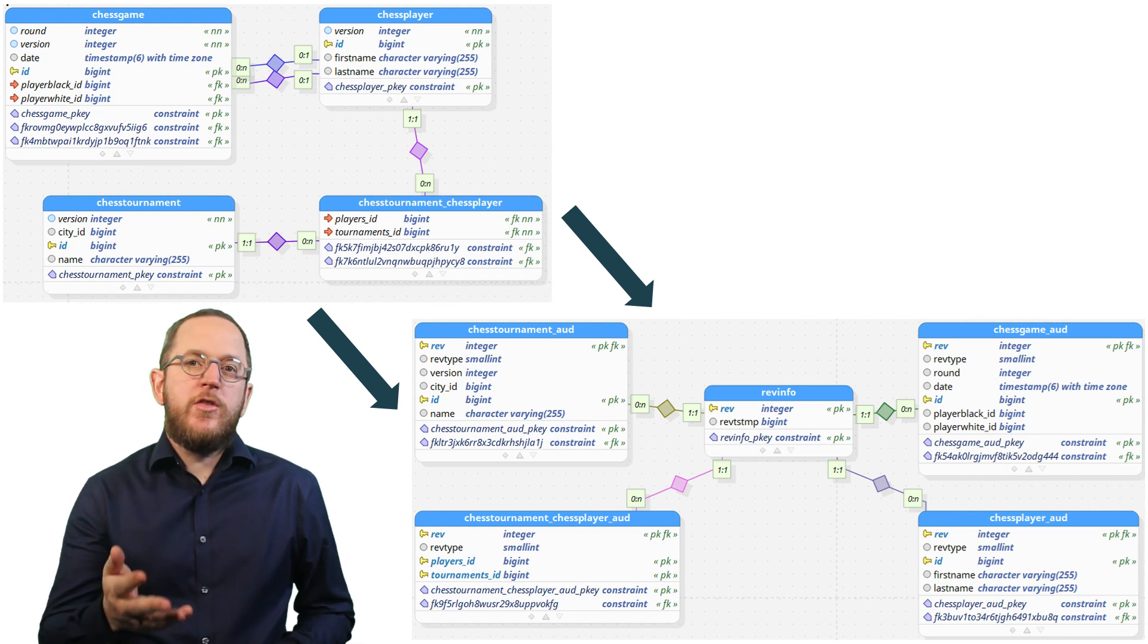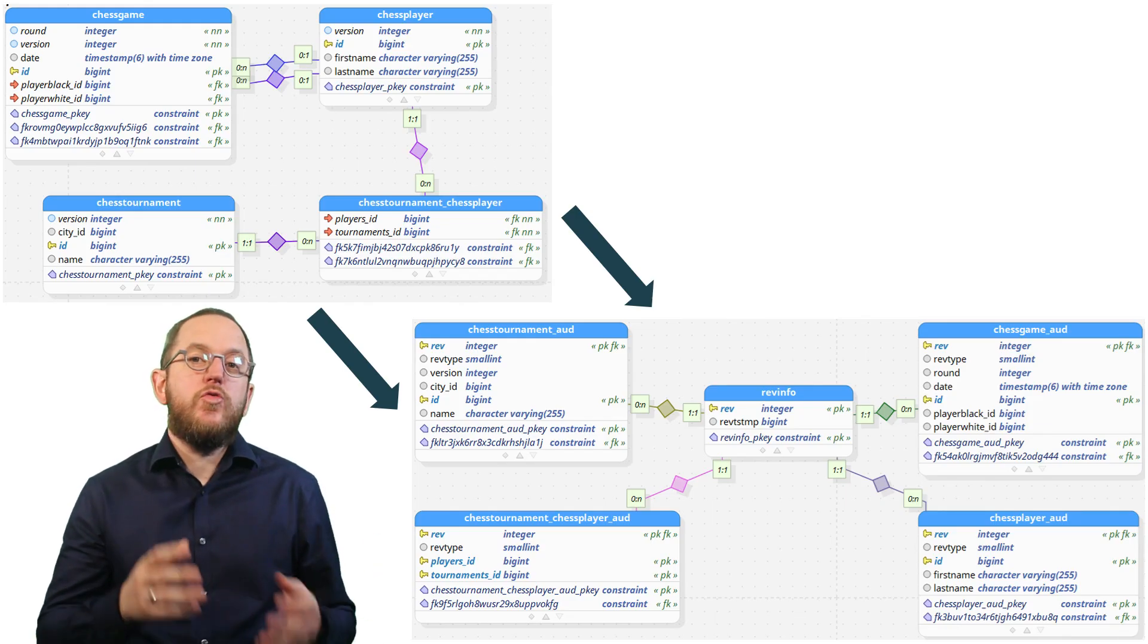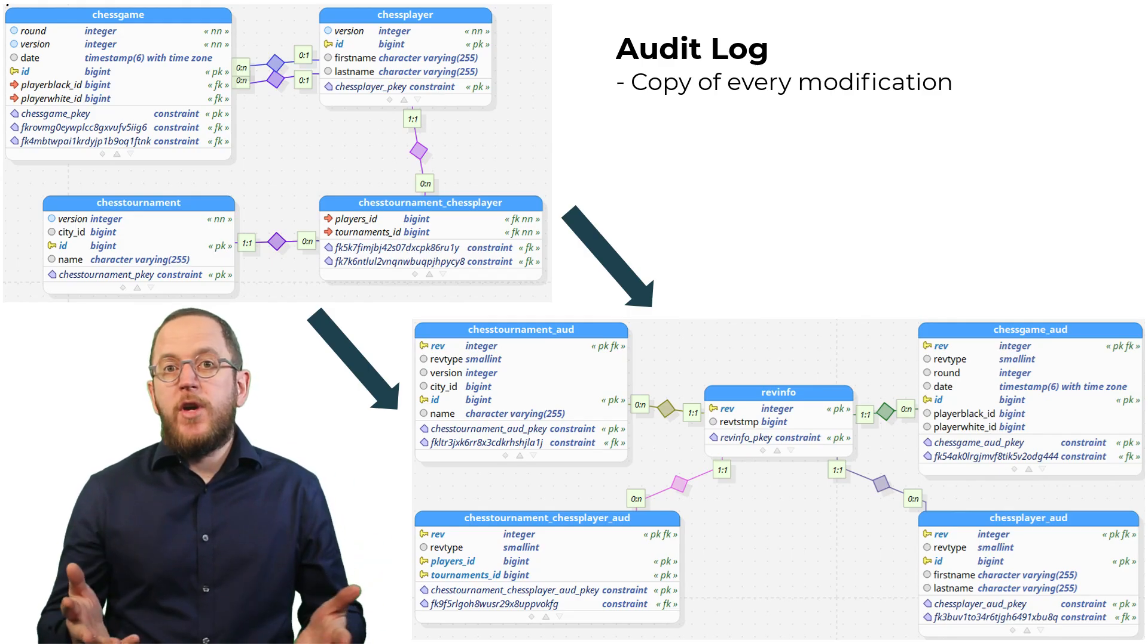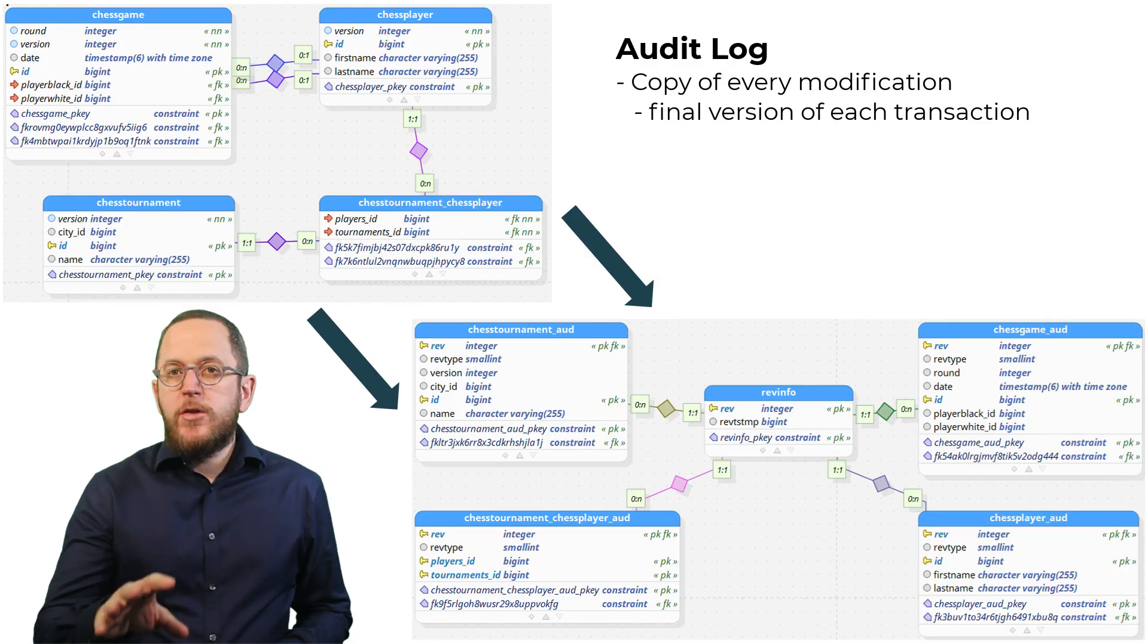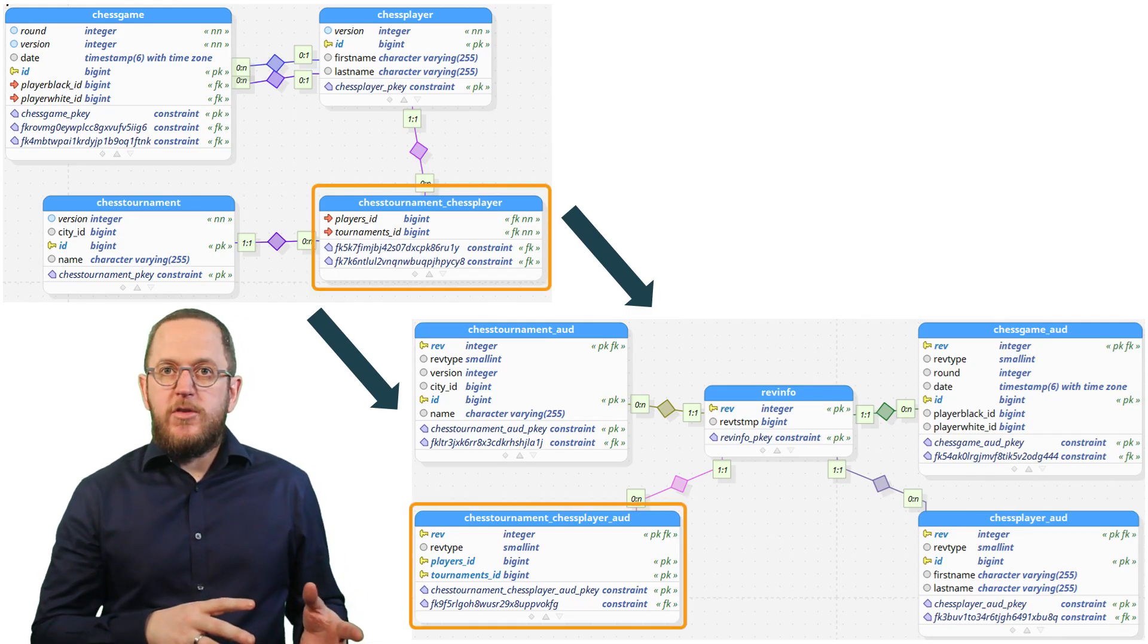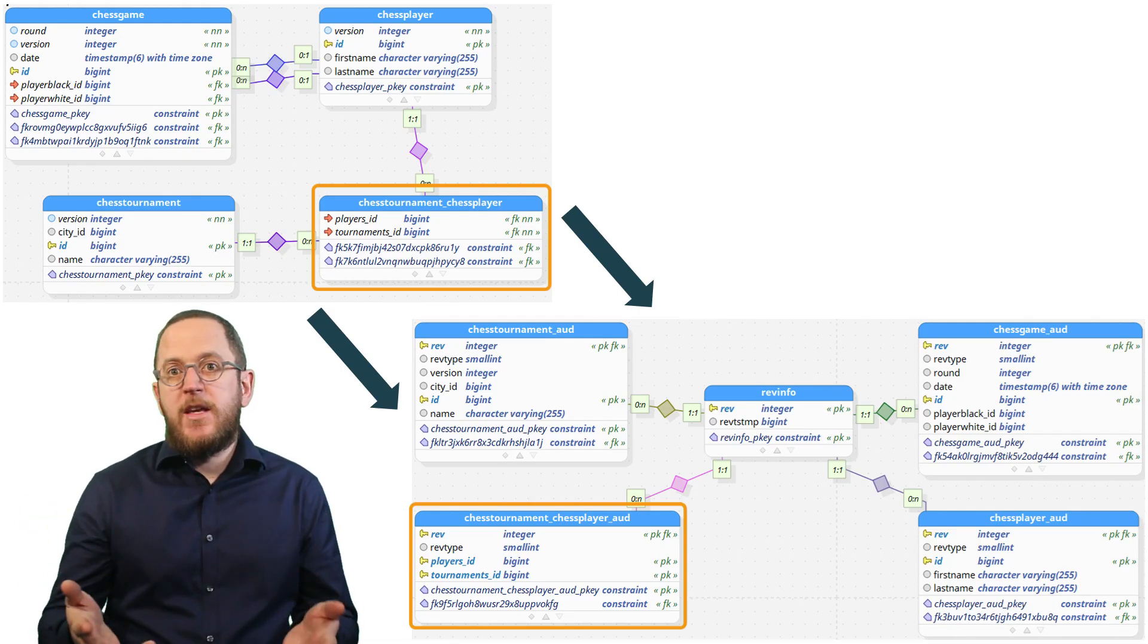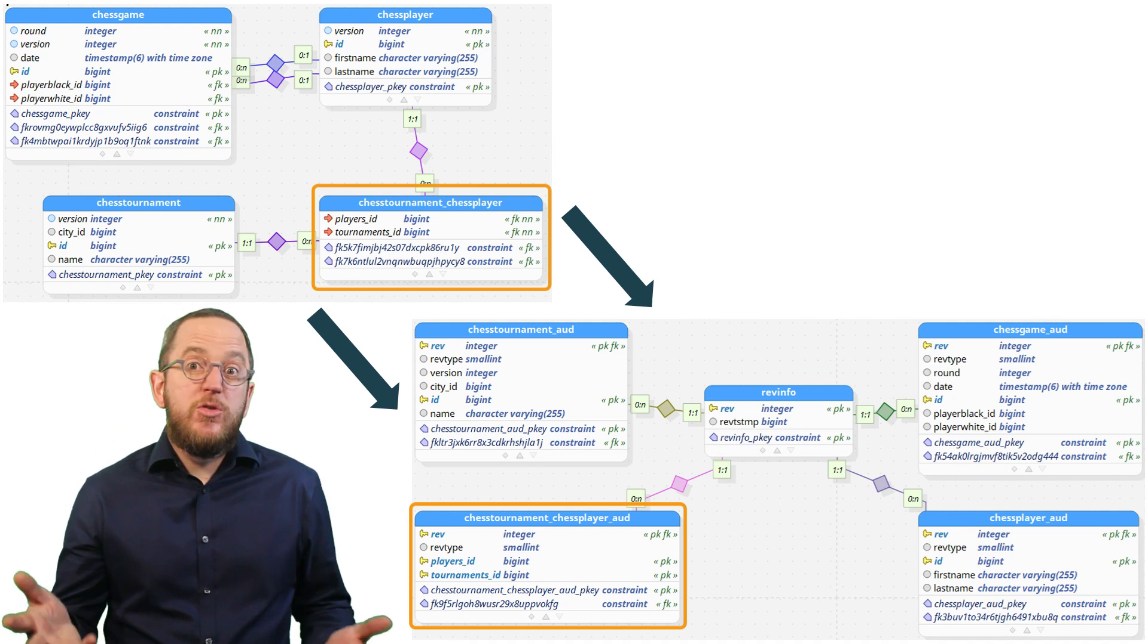So whenever you insert a new record, update an existing one, or delete one, your application writes a copy of that record to a separate database table. But if you modify a record multiple times within the same transaction, the audit log usually only stores the final version. This also includes records in relationship tables, which for example represent a many-to-many relationship, and that's something many teams forget in their first implementation.